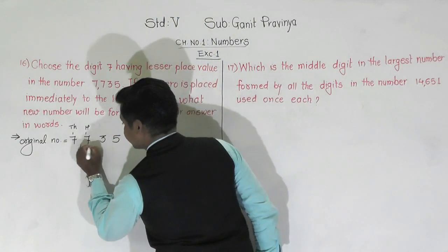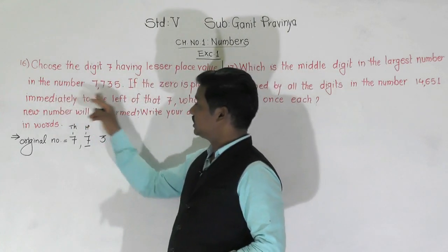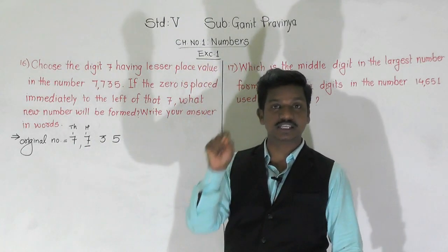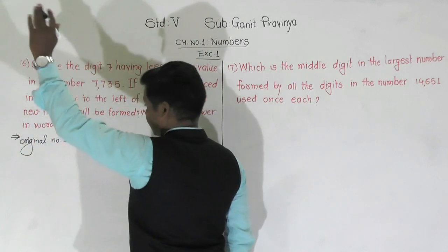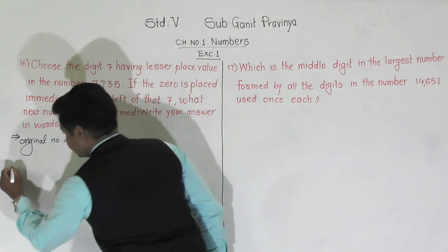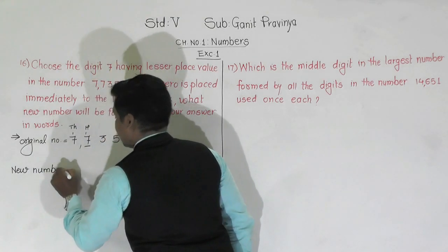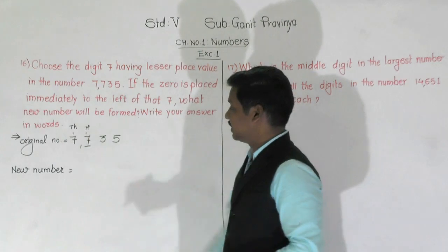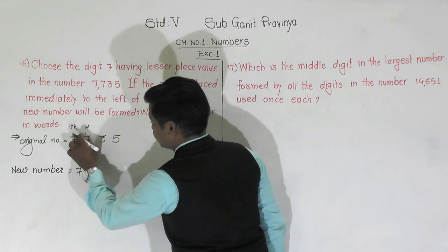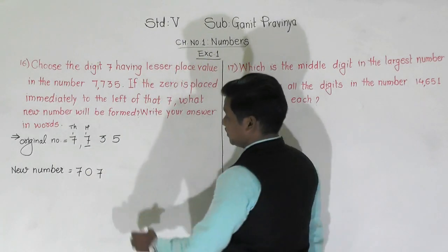So we have to choose this 7. If 0 is placed immediately to the left of that 7 — this is our left side — 0 will come here to the left of this 7. The new number formed after placing 0 to the left of this 7: we write this 7 as it is, put 0 on the left of this 7, then this 7, and remaining digits as they are.